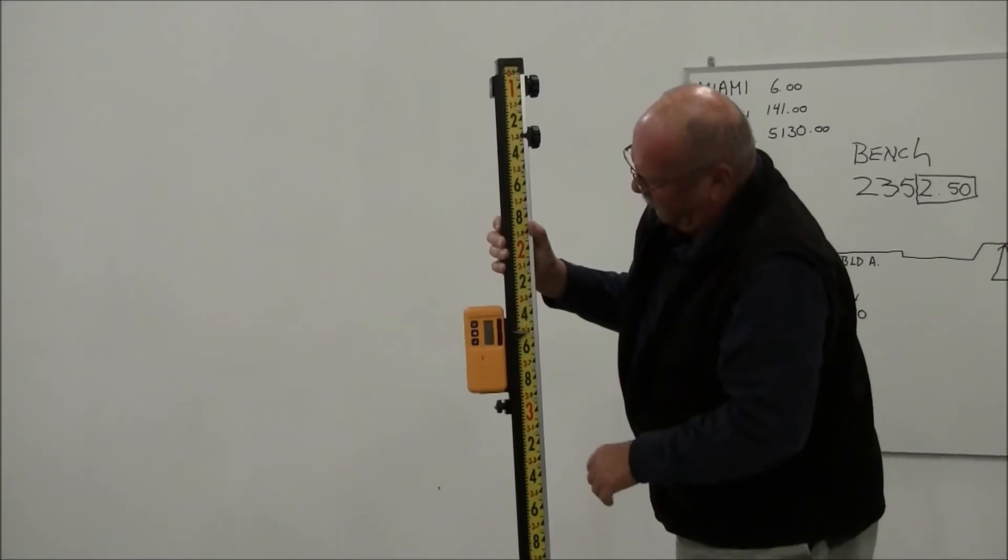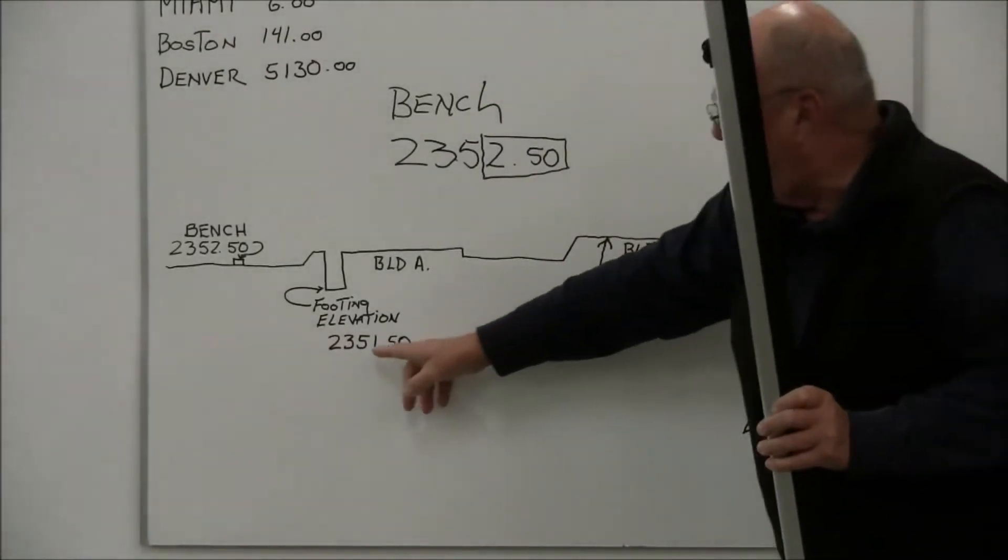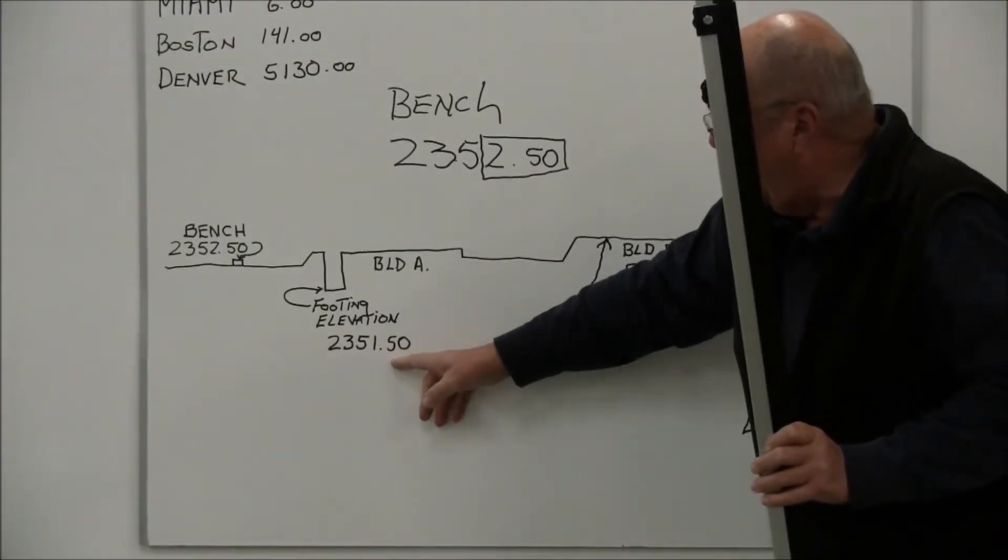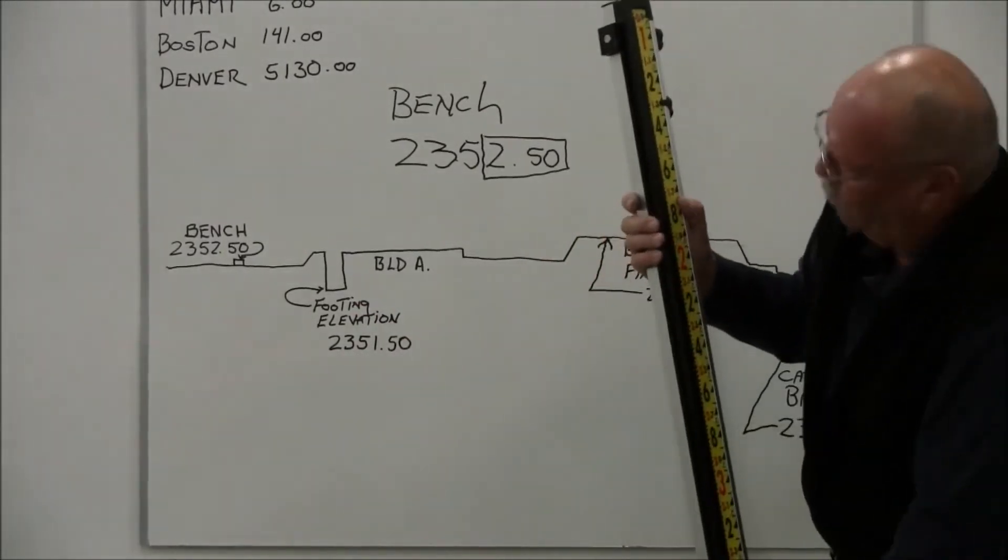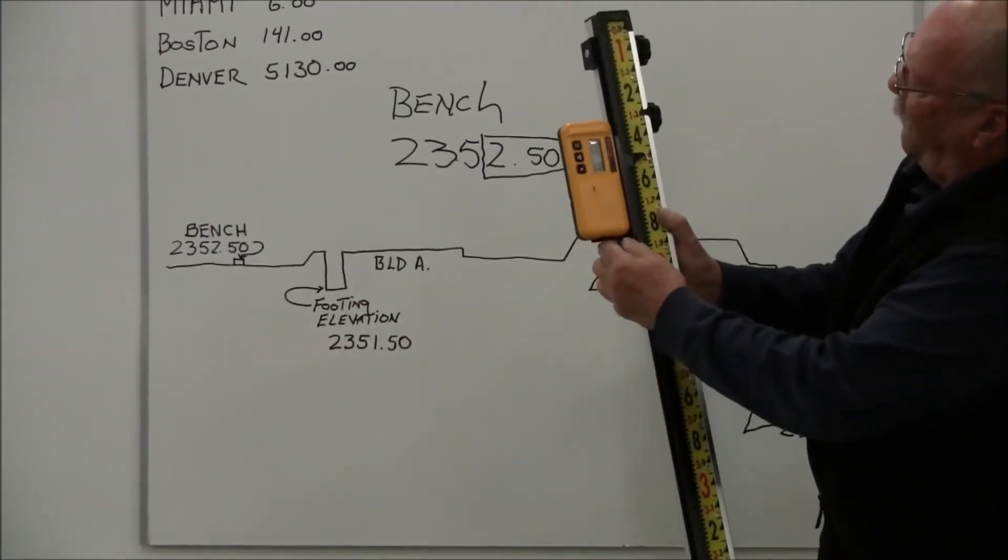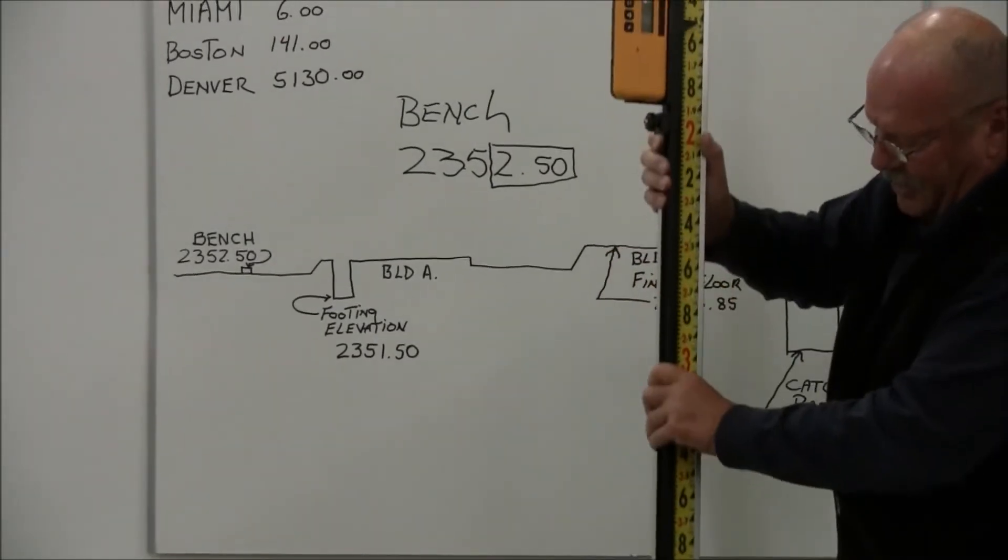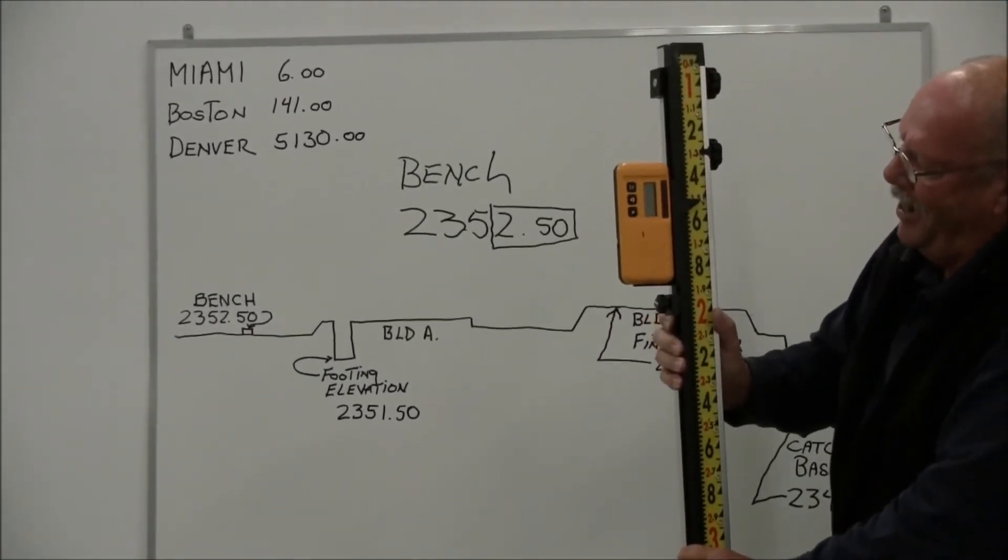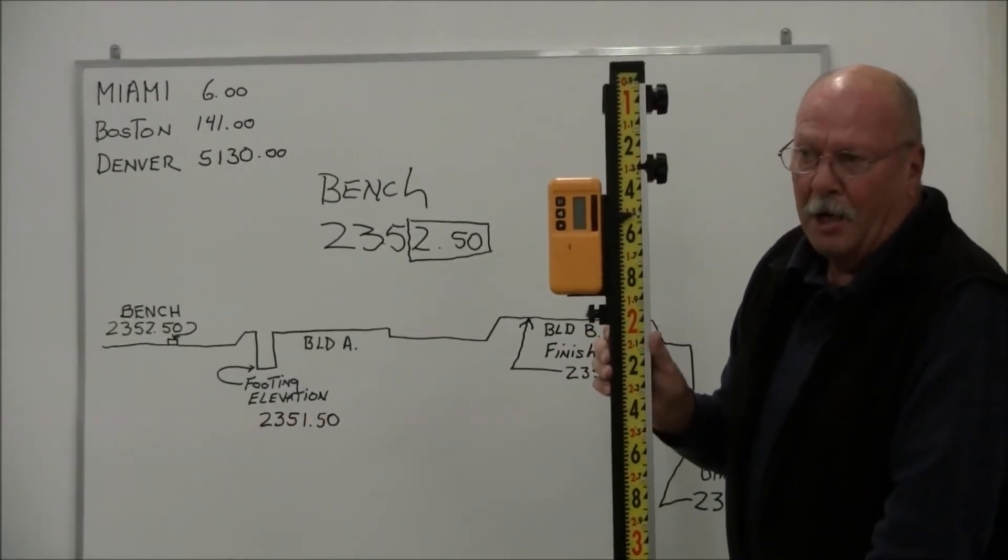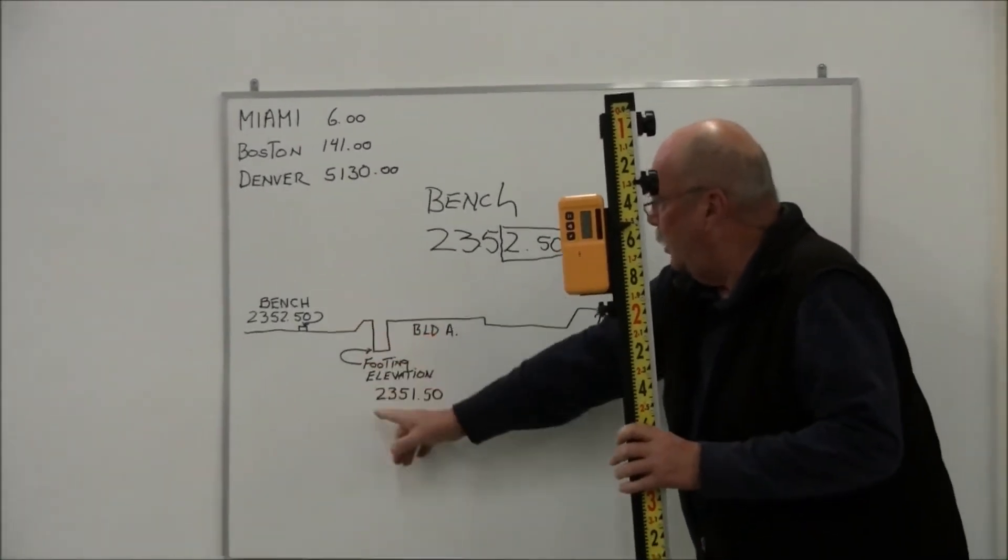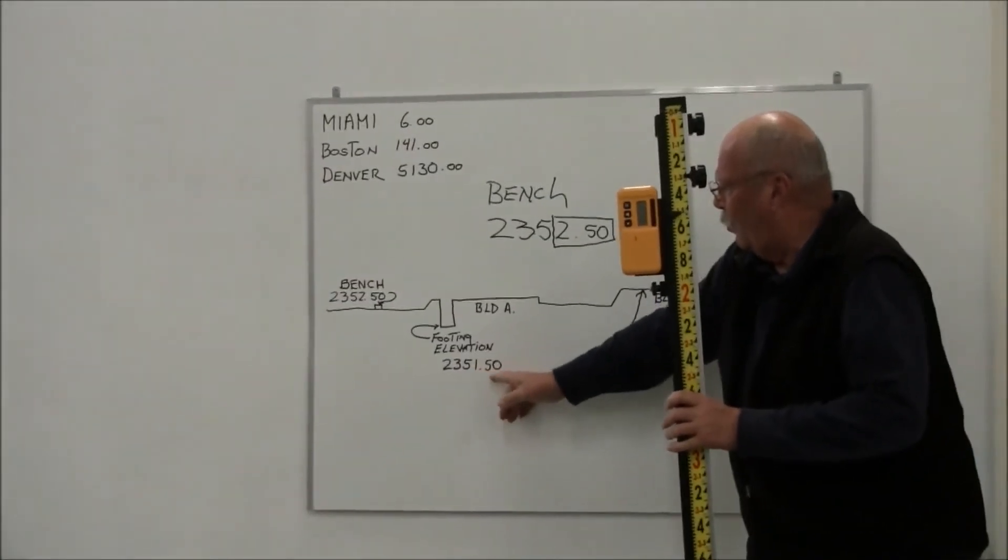Okay, so I'm on grade there and I'm at 2.50. If I want to pick up elevation at 2,351.50, which is say a footing elevation, I can run the receiver up to 1.50. And as I dig down, when the receiver goes off, I'll know that the bottom of my rod is at this 2,351.50.